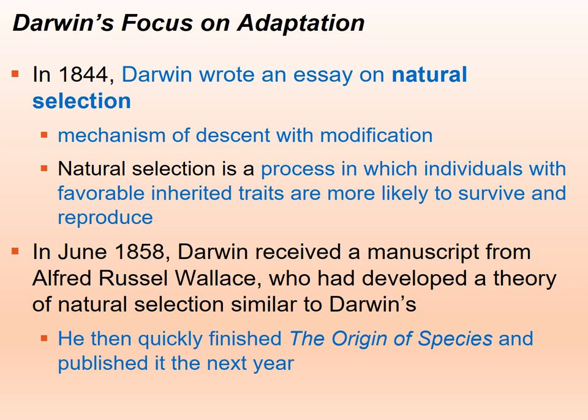Darwin wrote an essay mainly on natural selection. He saw natural selection as a mechanism of evolution — what he called descent with modification — but he didn't really introduce it publicly, partly because at that point in time, the topic was more religious in nature and might not have been accepted very well. Natural selection is a process in which individuals with favorable inherited traits that are beneficial in a particular environment are more likely to survive and reproduce, leading to an increase in that trait in the population.